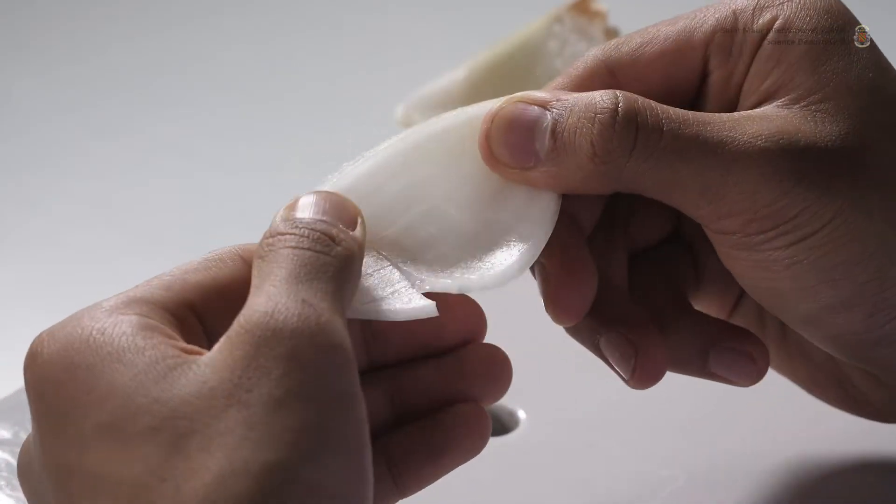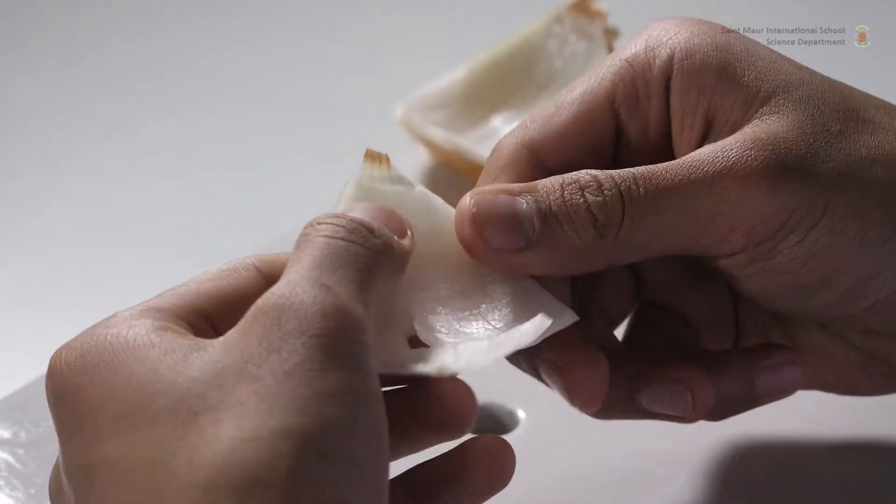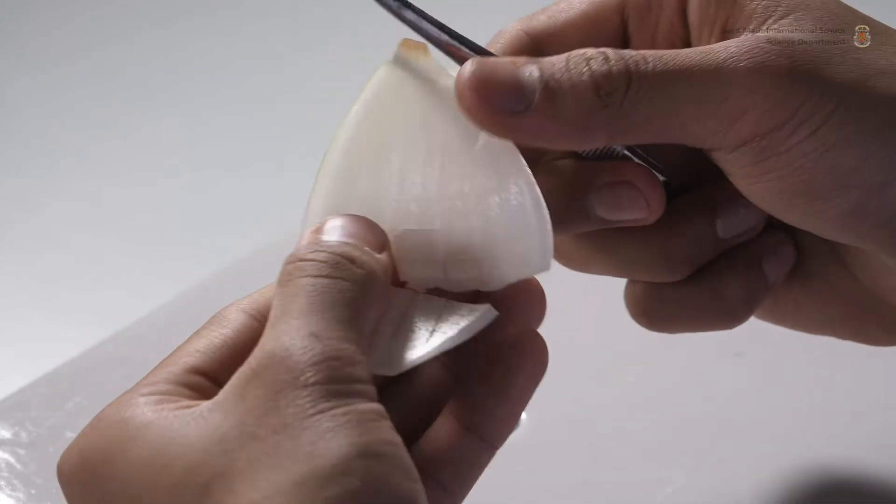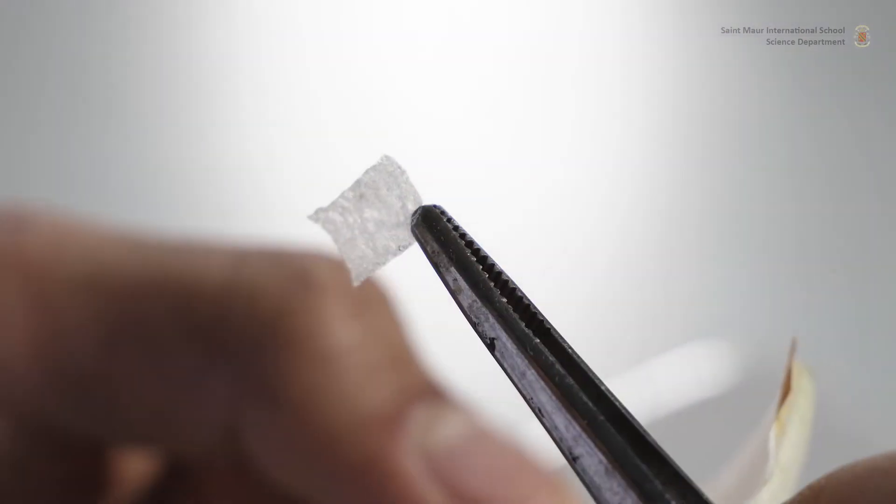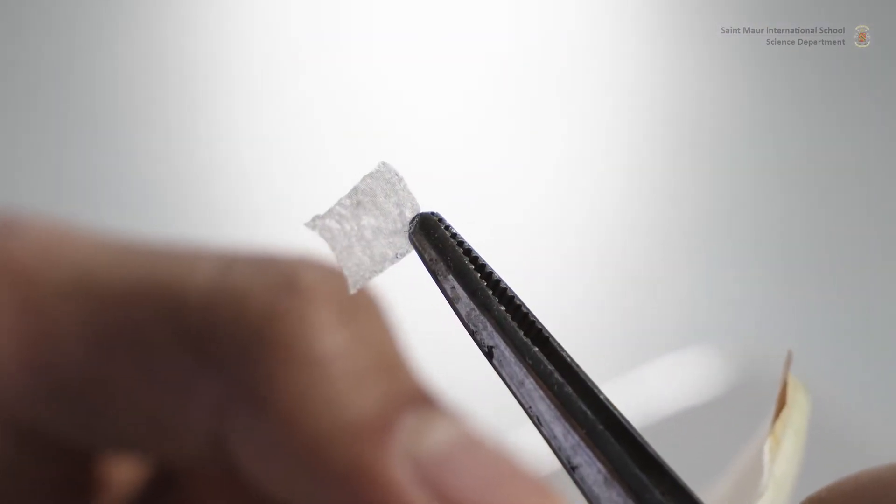Just before treatment, peel off an epidermal section, either using tweezers or your fingers. Make sure you do not peel off excessive fleshy tissue underneath as you lift the layer.